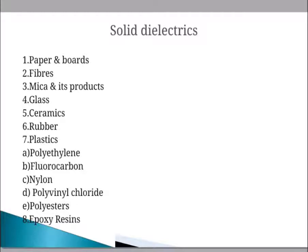The thickness and density of paper vary depending on the application. Low density paper is preferred in high frequency capacitors and cables, medium density paper is used in power capacitors, and high density paper is used in DC and energy storage capacitors and for insulation of DC machines.